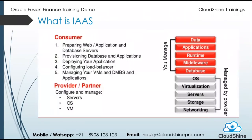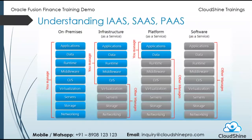In IaaS, the company provides you just the infrastructure. You have to install your own application, your own database server, etc. Just the infrastructure is provided by the service provider — examples include Amazon and all major cloud computing companies. You have to do your own OS installation, middleware installation, runtime, data, and application. They will just provide you the storage facility, service, and networking.